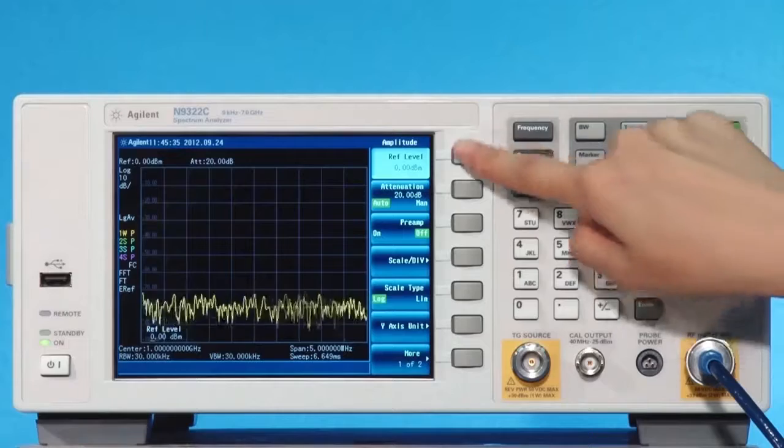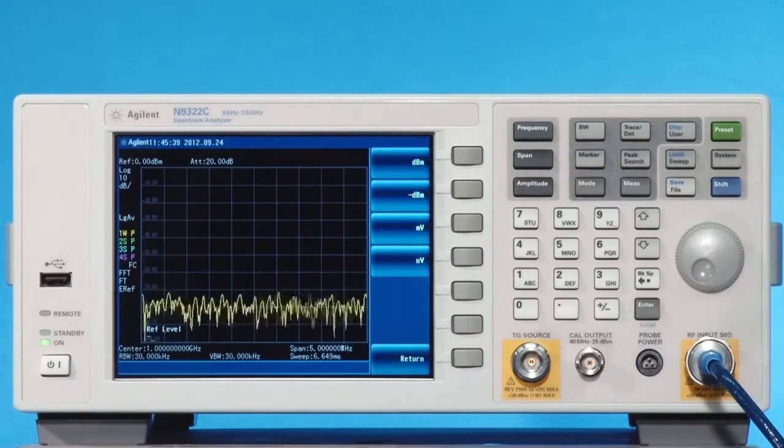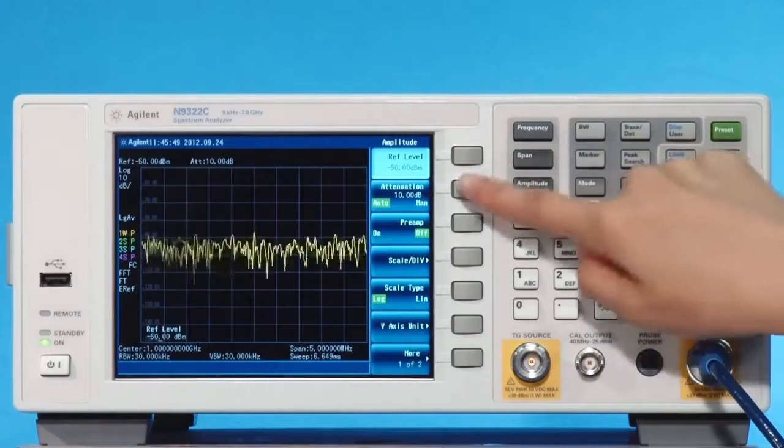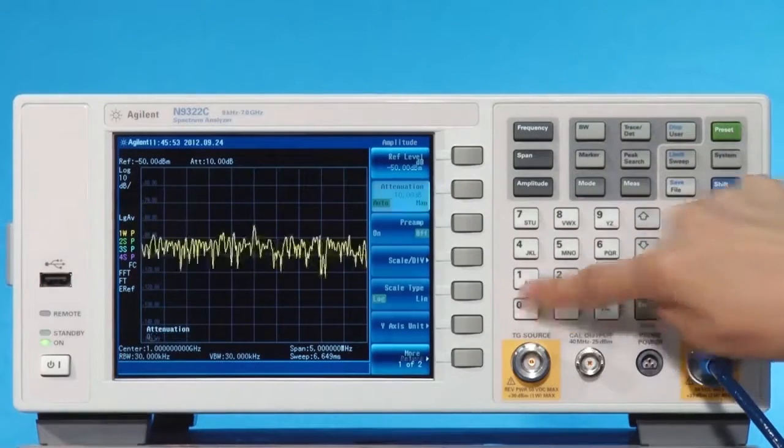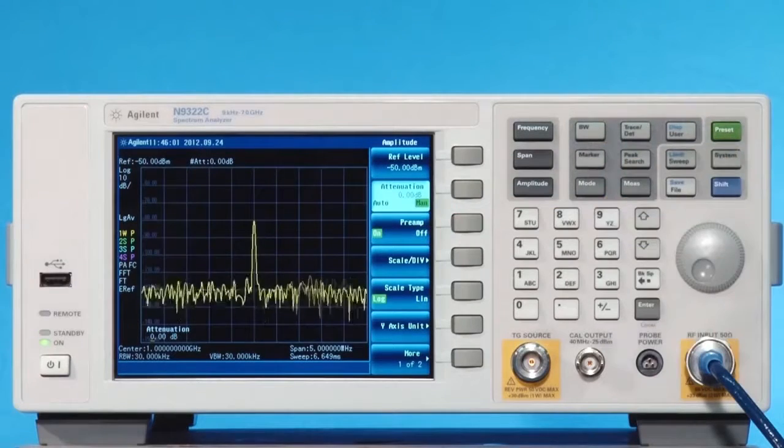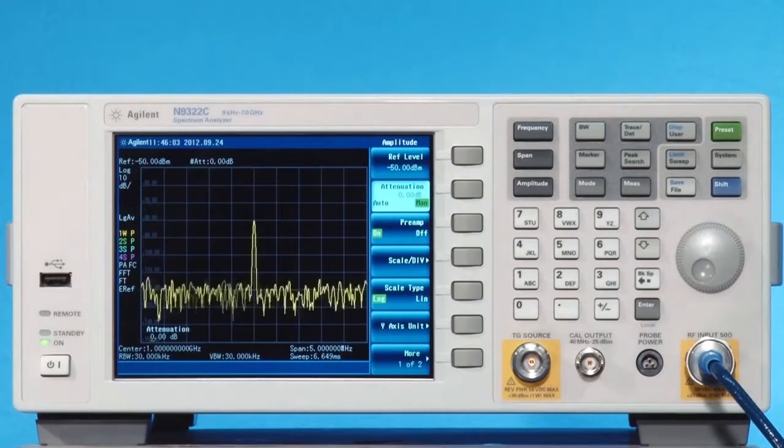Press Amplitude Reference Level minus 50 dBm. Press Attenuation 0 dB. Press Preamp, On to turn on the pre-amplifier.